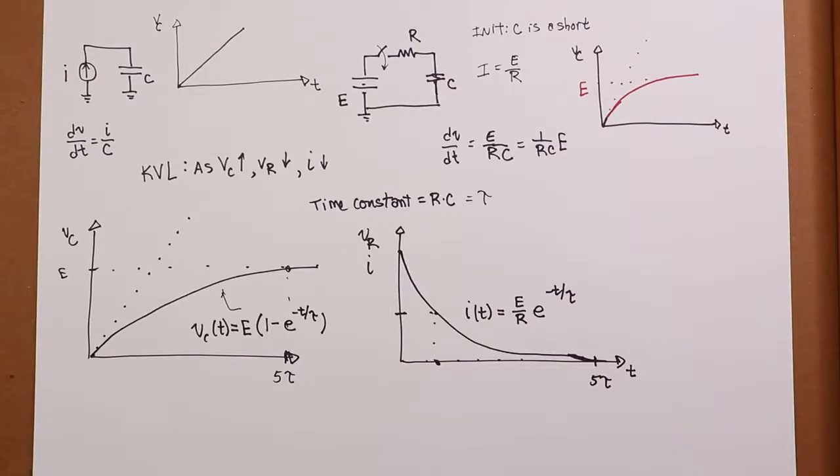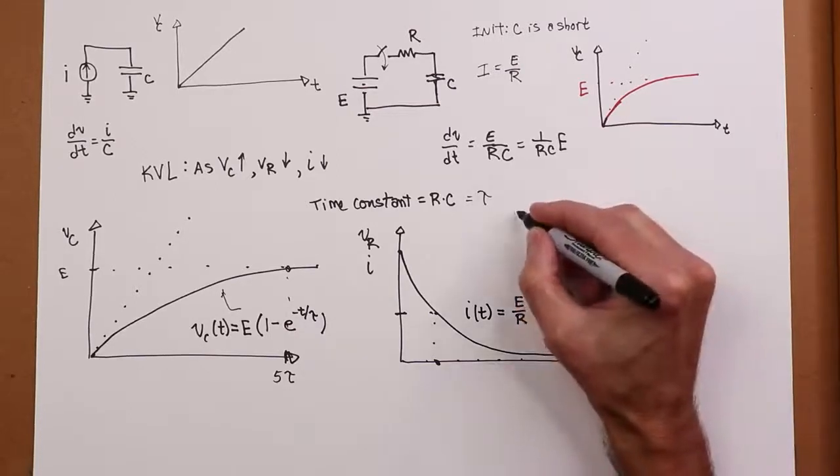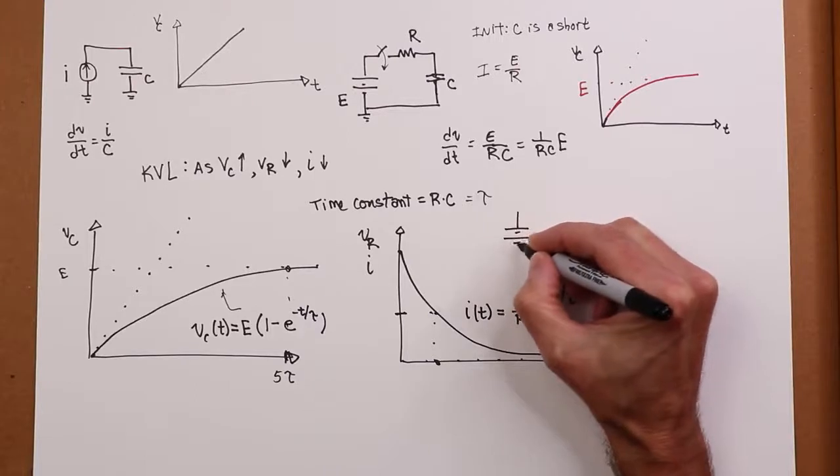So you could just get out your calculator, grind this thing through, or you could use the table that I had in the book, and just do it graphically, if you were so inclined. But this is what you're going to see. So very quickly, put some numbers on here.